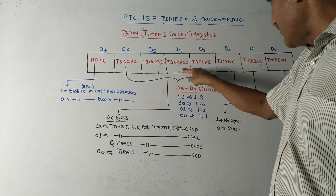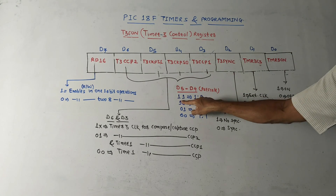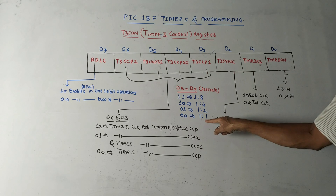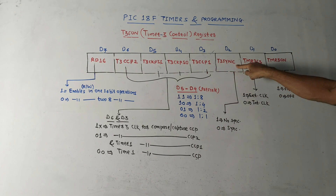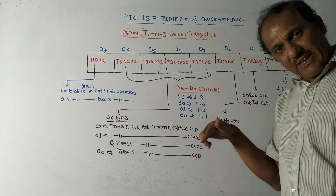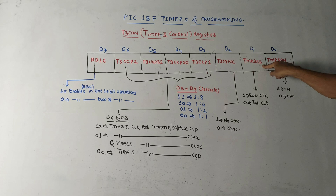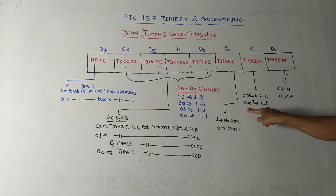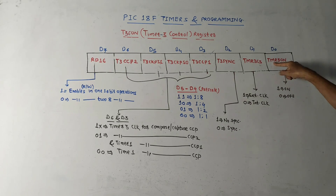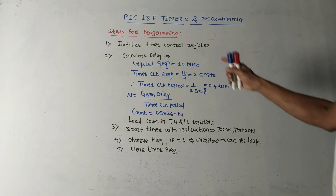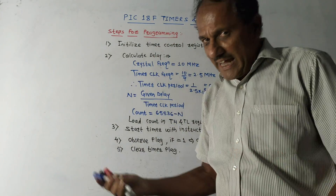Remaining bits d5 and d4 are the pre-scaling bits: 1 1 gives pre-scale by factor 1:8; 1 0 gives 1:4; 0 1 gives 1:2; 0 0 gives 1:1. Next is d2, the T3 synchronization bit: if 1, no synchronization with external clock; if 0, synchronization with external clock. Then TMR3CS, Timer 3 Clock Source Select: if 1 the clock source is external; if 0 it is internal. Last bit is TMR3ON: if 1 Timer 3 is on; if 0 Timer 3 is off.